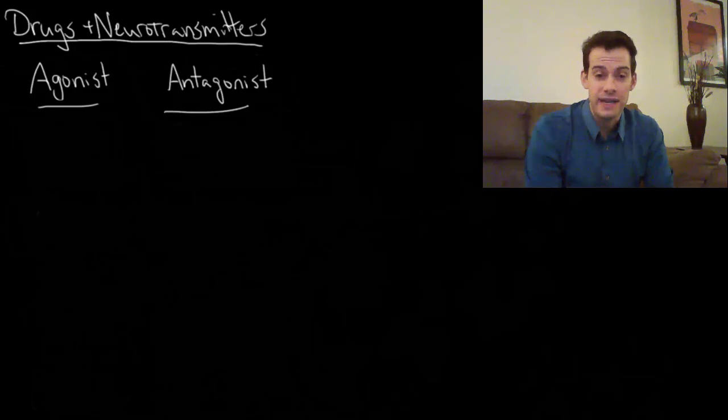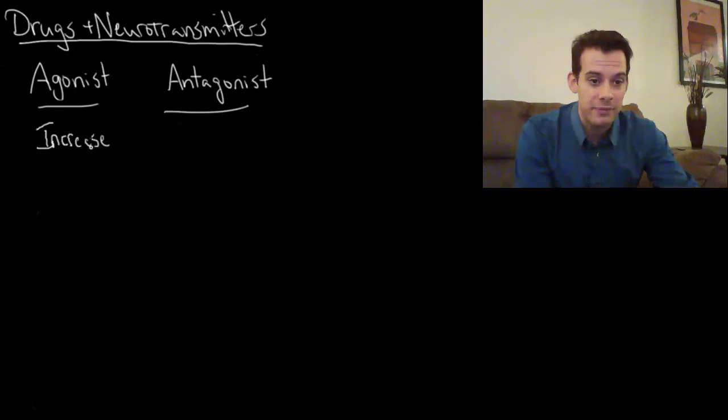Now we can broadly divide the effects of drugs into being either agonist or antagonist, and this refers to how the drug influences the neurotransmitter's functioning at the receptor sites on a postsynaptic neuron. So an agonist drug is going to be a drug that increases the effects of the neurotransmitter on the postsynaptic neuron. You can say an agonist increases neurotransmitter effects while an antagonist drug decreases the effects of the neurotransmitter on the postsynaptic neuron.